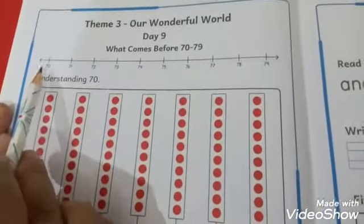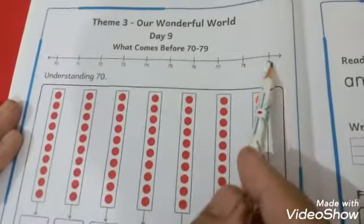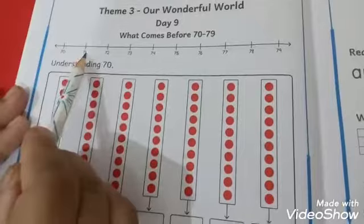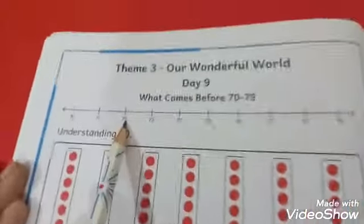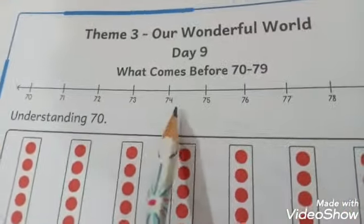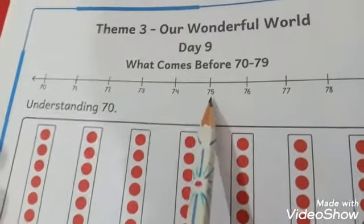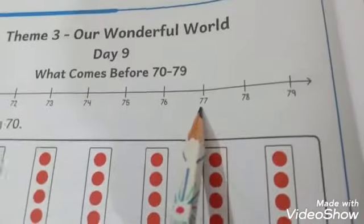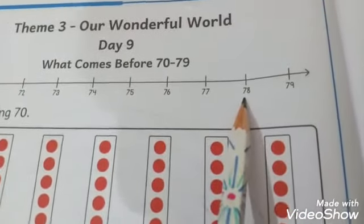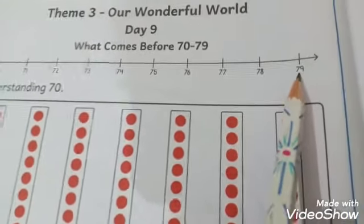This is number line 72, 79, 70, 71, 72, 73, 74, 75, 76, 77, 78, and 79.